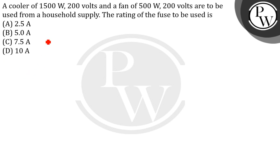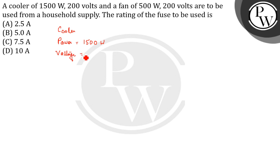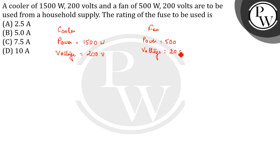First, we will take the values for the cooler. For the cooler, the power is given as 1500 watts and the voltage is given as 200 volts. Similarly, for the fan, the power is 500 watts and the voltage is 200 volts. Now we will find the current in each case.